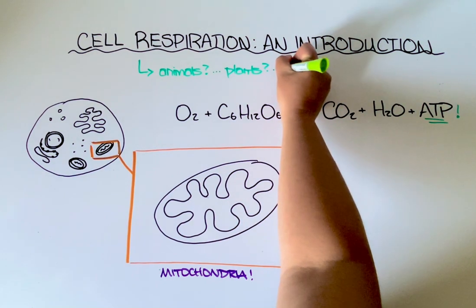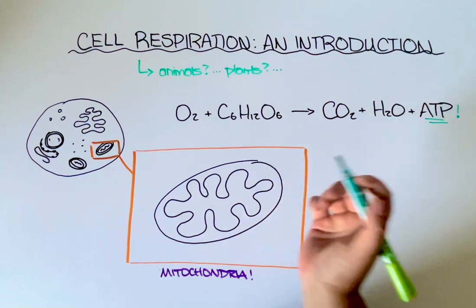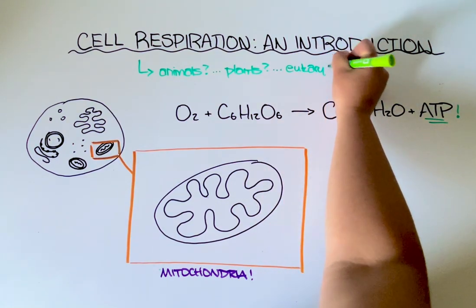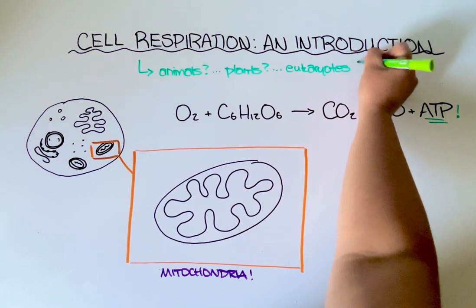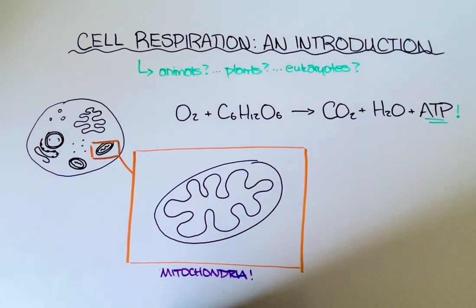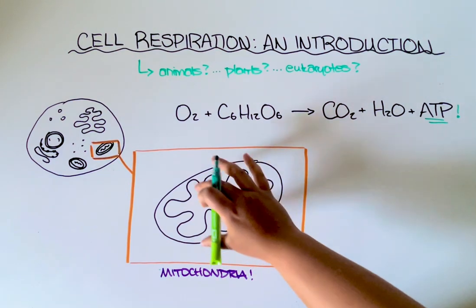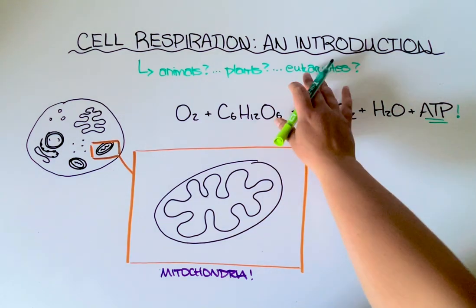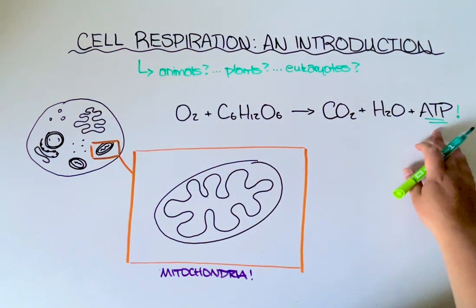In fact any organism with a mitochondria does cell respiration. So eukaryotic cells, those are any type of cell that have specialized membrane-bound organelles like this as well as a true nucleus. We call them eukaryotes. So that includes plants, animals, fungi, and little single-celled organisms called protists. So really if we want to be correct we would say that eukaryotes do cell respiration to make ATP.